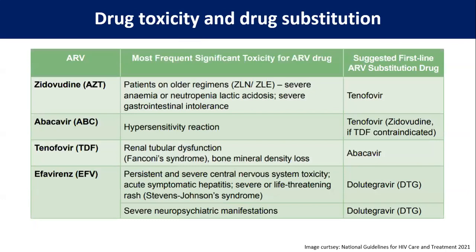For drug toxicities and drug substitutions: if zidovudine causes severe anemia, neutropenia, or lactic acidosis, substitute zidovudine with tenofovir. If hypersensitivity reaction occurs with abacavir, substitute abacavir with tenofovir or zidovudine if there is no anemia. If tenofovir causes renal tubular dysfunction, Fanconi syndrome, or bone mineral density loss, change tenofovir to abacavir. If efavirenz produces neuropsychiatric symptoms or severe life-threatening Stevens-Johnson syndrome, replace efavirenz with dolutegravir. For persistent neuropsychiatric manifestations, also shift the patient to a dolutegravir-based regimen.